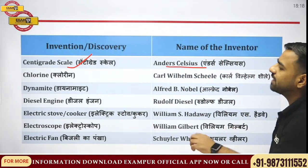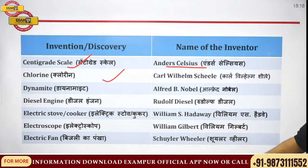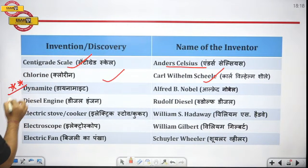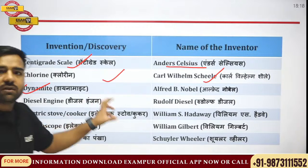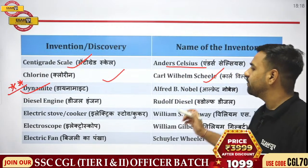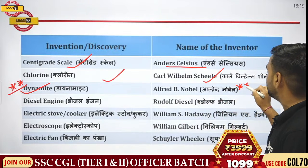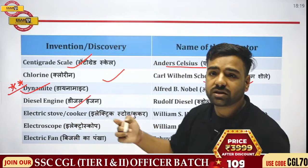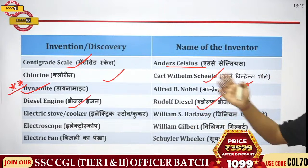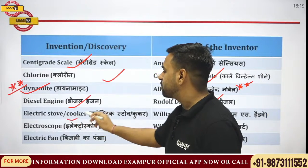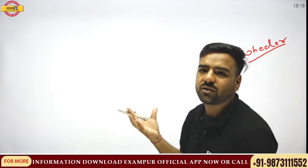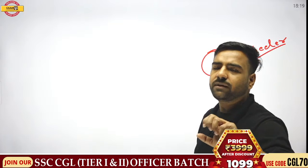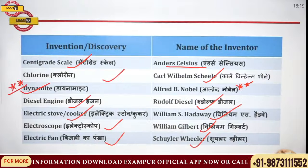Who discovered chlorine? It was Scheele. Then, dynamite — very important, asked many times in examinations. Dynamite was discovered by Alfred Nobel. Next, the diesel engine — from the name itself it is clear — it was invented by Rudolf Diesel. Then the electric stove or cooker: the central part looks like a wheel, so the answer is Wheeler.